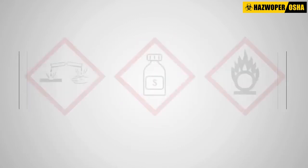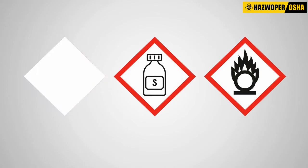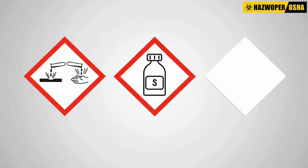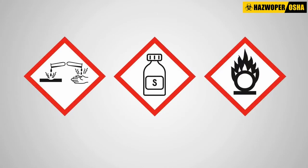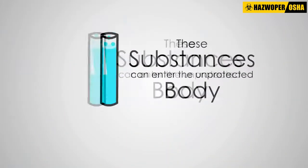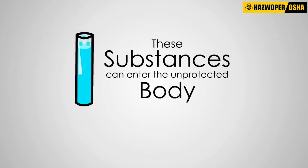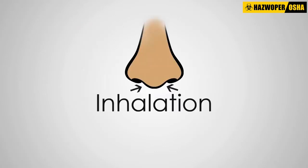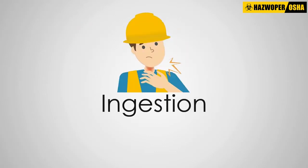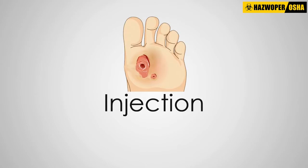Broadly speaking, these substances may be corrosives, solvents, oxidizers, or a combination or mixture of these three. These substances can enter the unprotected body by inhalation, skin absorption, ingestion, or through a puncture wound such as an injection.